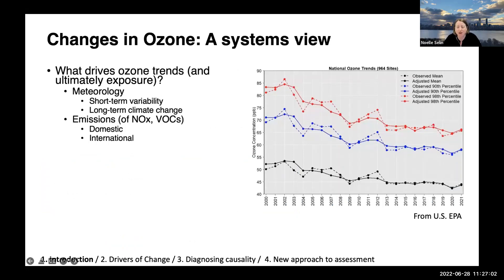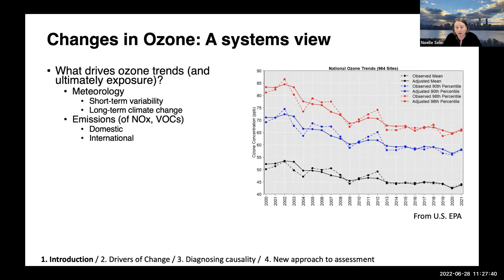When we look at changes in ozone, I pulled a graph from the U.S. EPA showing trends in ozone at national scale for the past two decades, including changes in the mean, the 90th, and the 98th percentile. There are several factors that drive this kind of trend. One is meteorology — the dotted line shows the adjustment the EPA makes to correct for changes in meteorology and ozone trends. Both short-term variabilities — day-to-day and year-to-year variation in weather — and long-term change, that is changes in climate, both affect ozone.